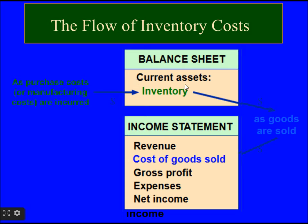Whenever we purchase inventory it becomes our current asset and the entry is made in the balance sheet. As the inventory is sold as goods to customers, it becomes an entry in the cost of goods sold on the income statement.